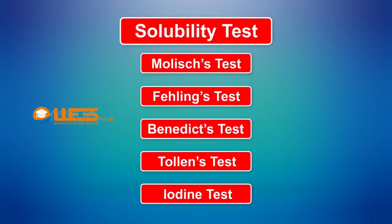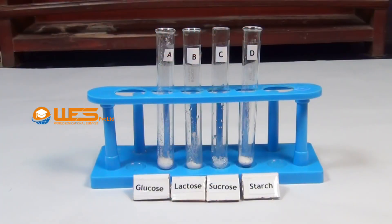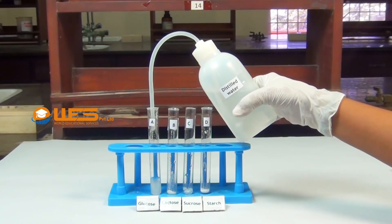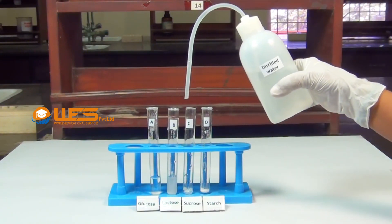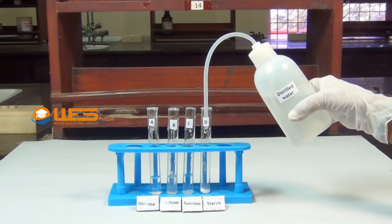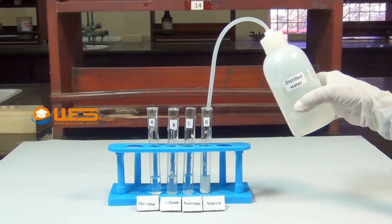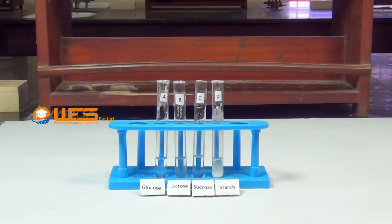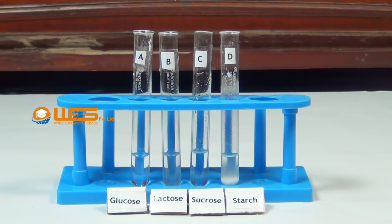Solubility Test. Take small amounts of glucose, lactose, sucrose and starch in four test tubes A, B, C and D respectively. Now add a small volume of distilled water to each test tube and shake well. We can see that glucose, lactose and sucrose are soluble in water whereas starch is insoluble in water.